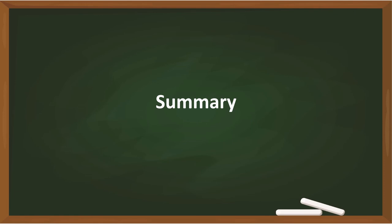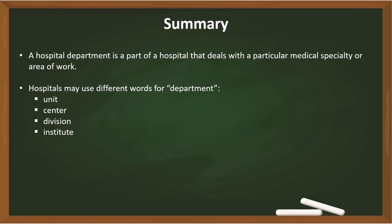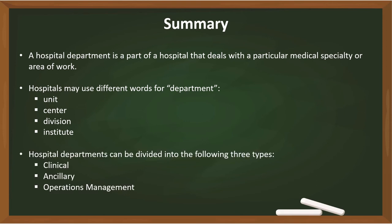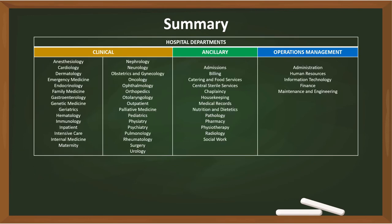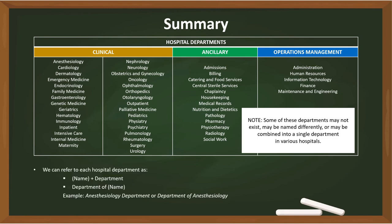Summary: First, a hospital department is a part of a hospital that deals with a particular medical specialty or area of work. Second, depending on different factors, hospitals may use different words for department — for example, unit, center, division, and institute. Third, hospital departments can be divided into three types: clinical, ancillary, and operations management. Fourth, some departments may not exist, may be named differently, or may be combined into a single department in various hospitals. Finally, we can refer to each hospital department as 'Name Department' or 'Department of Name.'